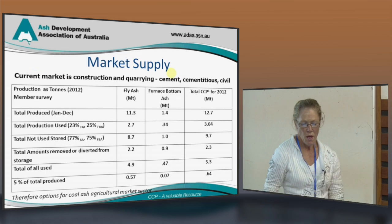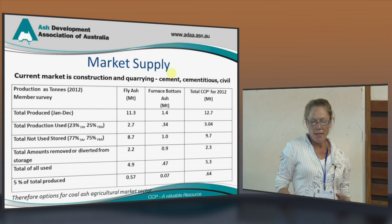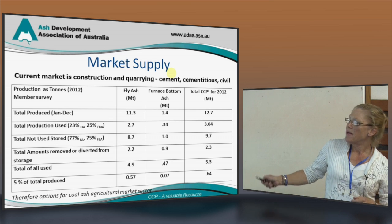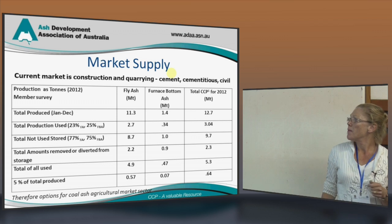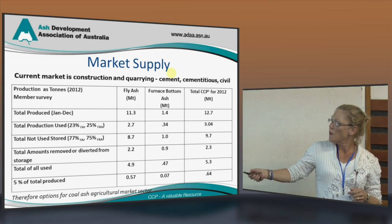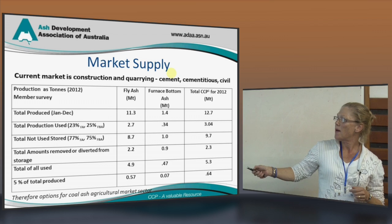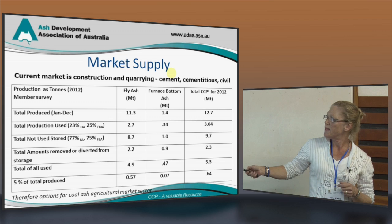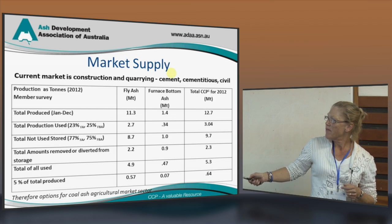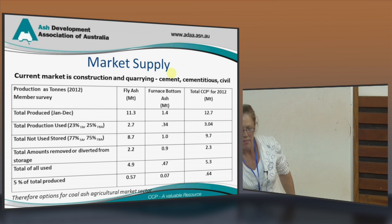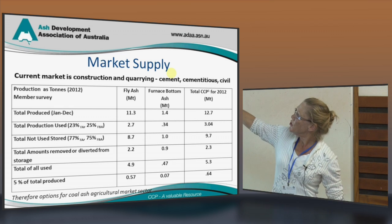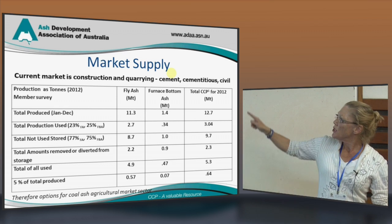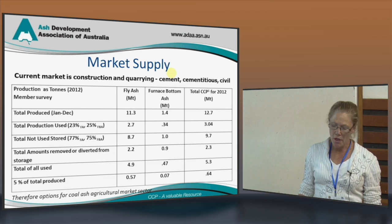Those acidic soils are below pH 5.5 — they are the areas shown in red. These are data for 2012. Our annual production is about 12 to 14 million tonnes per year. For fly ash, for example, we produced 11.3 million tonnes and sold 2.7 million tonnes, so we have 8.7 million tonnes available for agriculture. We also dug out 2.2 million tonnes from the ground, most of which was used for quarrying and cement.